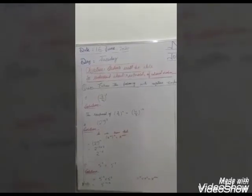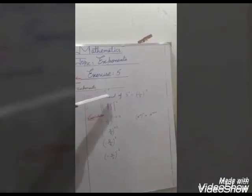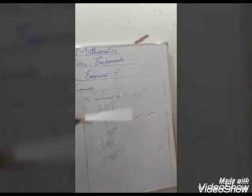Then comes 5 to the power 2 multiplied by 5 to the power 3. Since the bases are the same, add the exponents: 5 to the power 2 plus 3, which equals 5 to the power 5. The reciprocal of 5 to the power 5: since the base is 5 and the exponent is 5, taking the reciprocal gives 1 by 5 whole power minus 5.